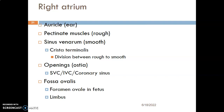The sinus venarum is the smooth part of the right atrium and it is separated from the rough part by what you call the crista terminalis. So the crista terminalis separates the sinus venarum from the pectinate muscles, separating the rough and smooth parts of the right atrium.